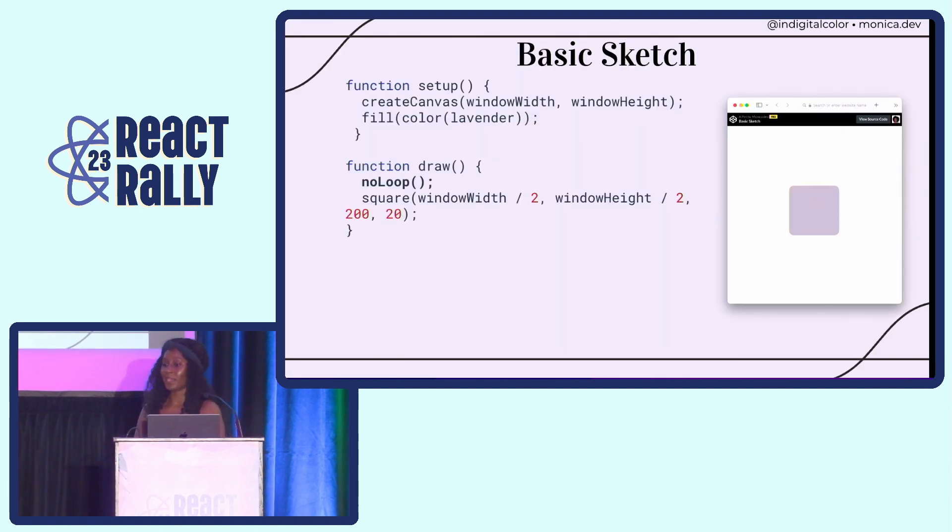And so this is an example of a very basic p5.js sketch. So we have a setup function, and we're going to create a canvas that's the same width and height as the browser window. And then filling the color to lavender. And then within the draw loop, you'll see that I actually have this function called no loop. So instead of having this draw function called 60 times per second, I actually am like, okay, let's just call the draw loop one time. And then drawing a square, and the square is positioned within the middle of the canvas. So the first two parameters of the square function in p5.js are the x and y coordinates. And then the third parameter is the size of the square, and then the last parameter is the roundness of the corners.